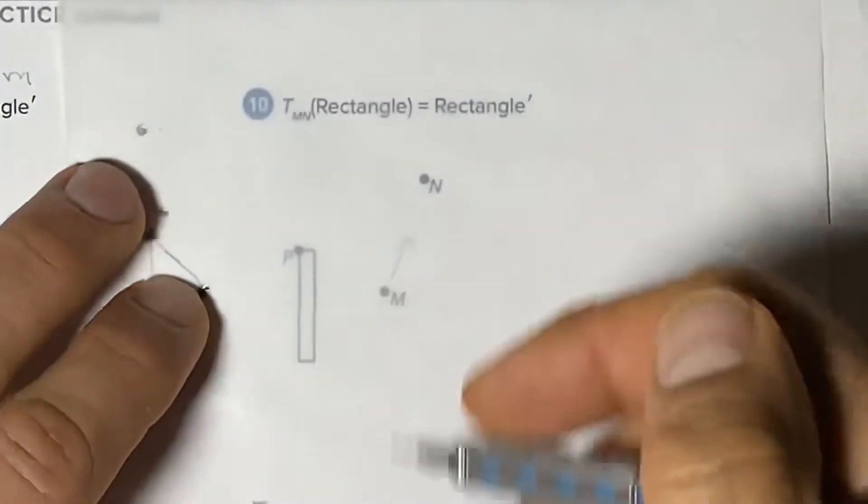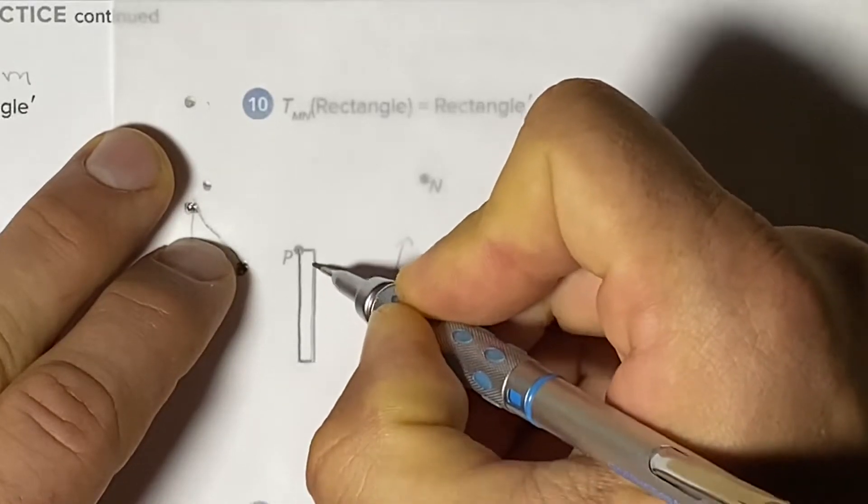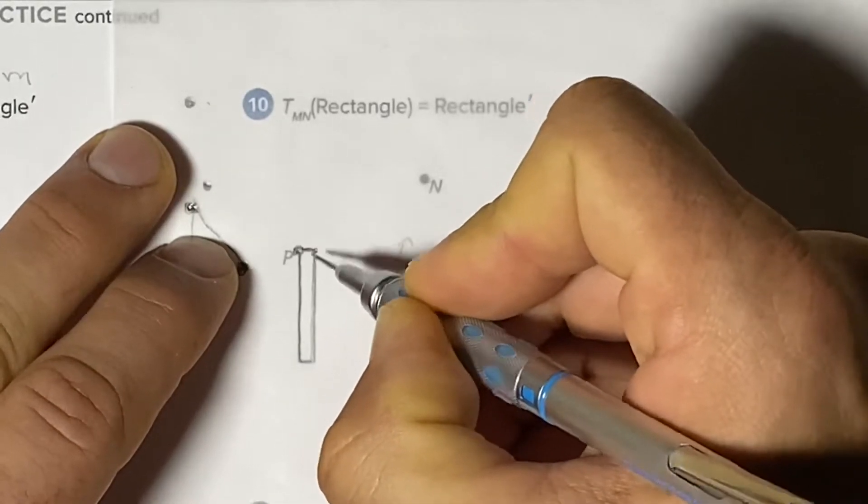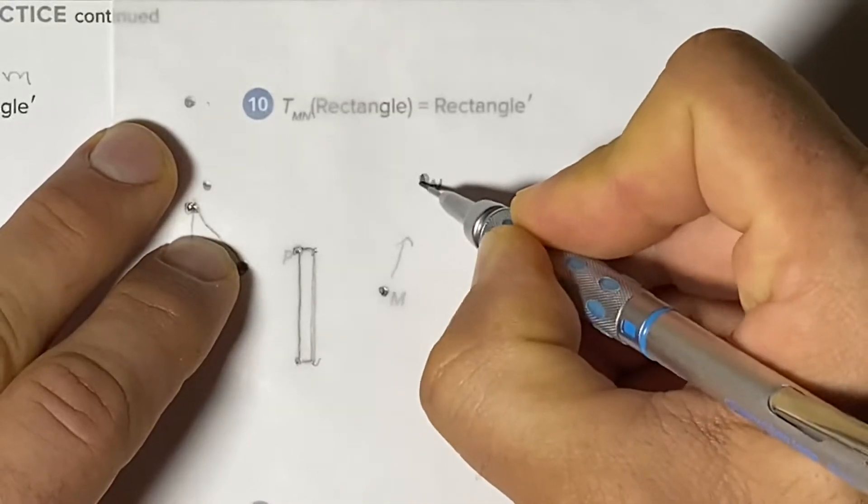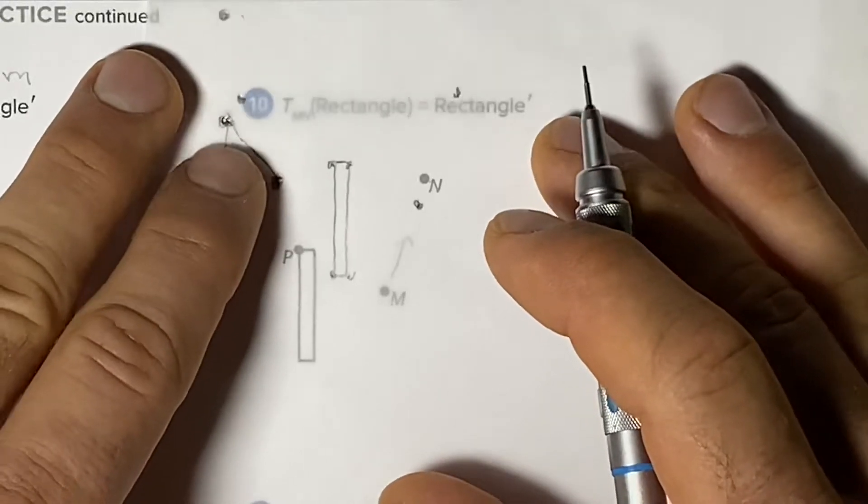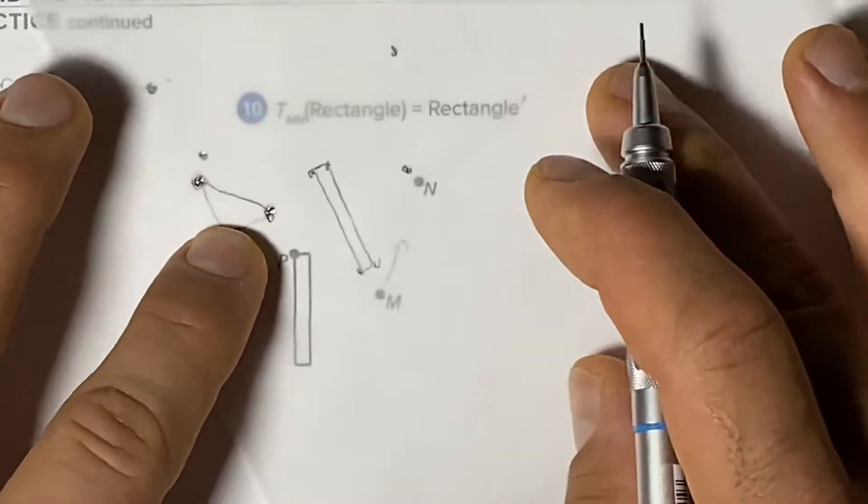Now if we were to trace this shape and trace M and N, if we slide up this path, we're sort of estimating that we didn't rotate it.